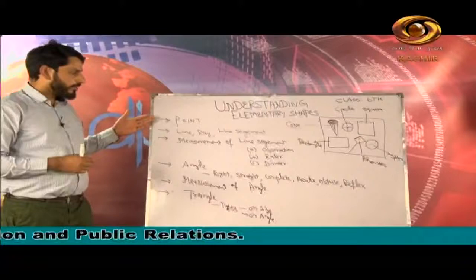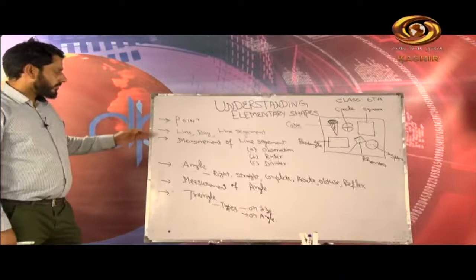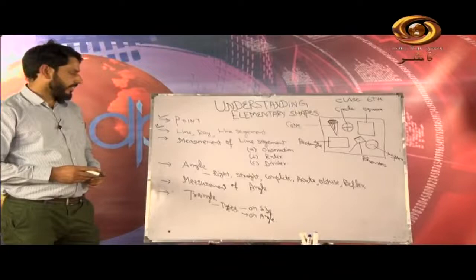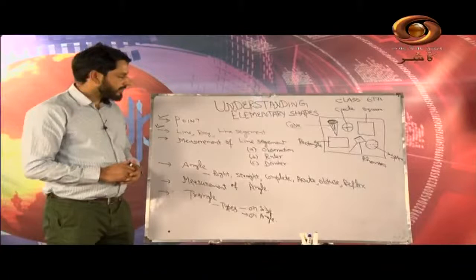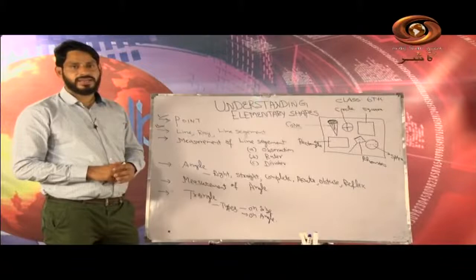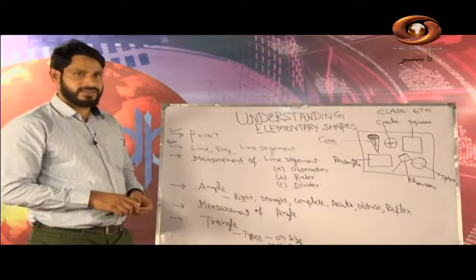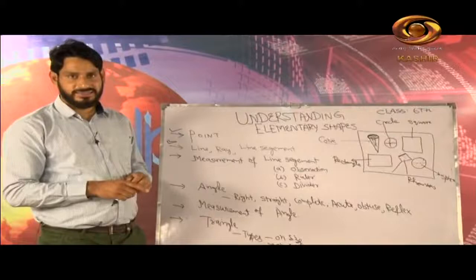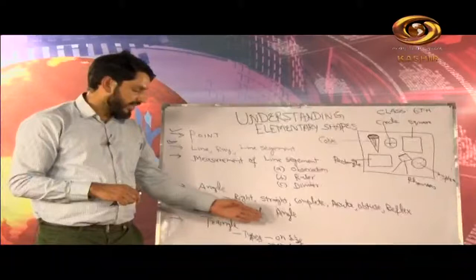A brief view about what we are going to have in this chapter. So, we will be dealing with what a point is. Then we will go to the line, ray, and line segment. Next, we will have the angles — details about angles, what an angle is and what are the different types of angles. Next, we will see how an angle is measured. And lastly, maybe today, we will see what a triangle is and what are their different types depending upon the size and the angle.